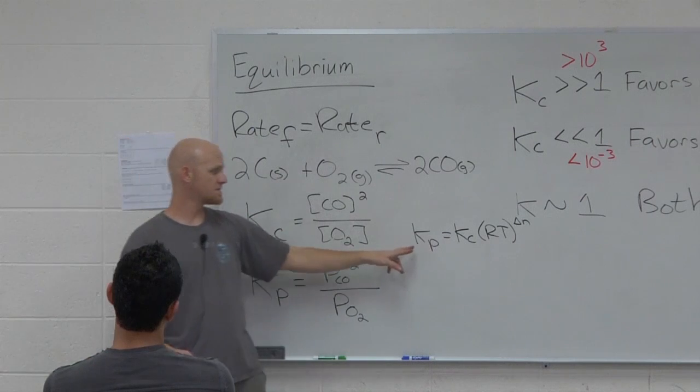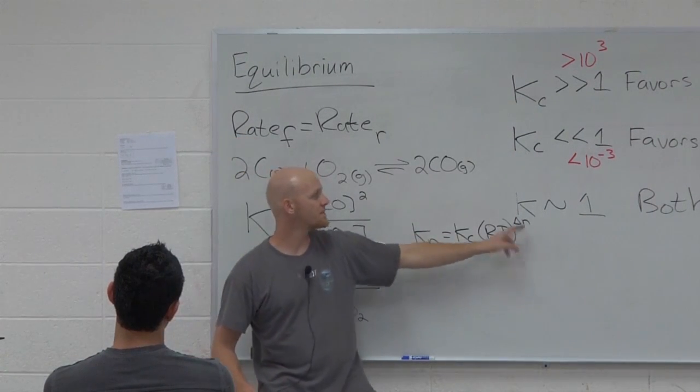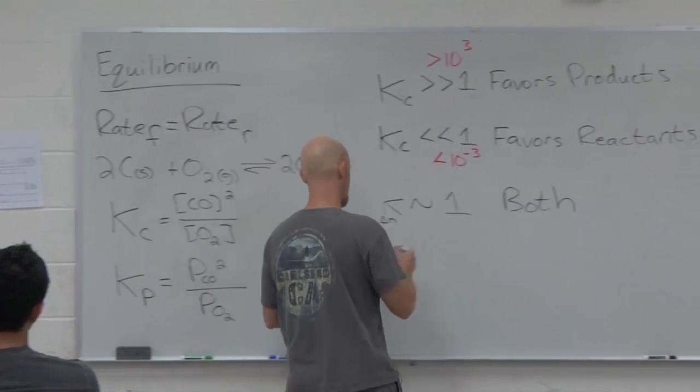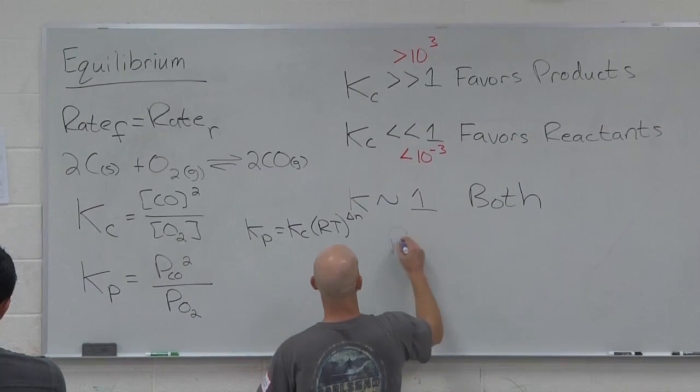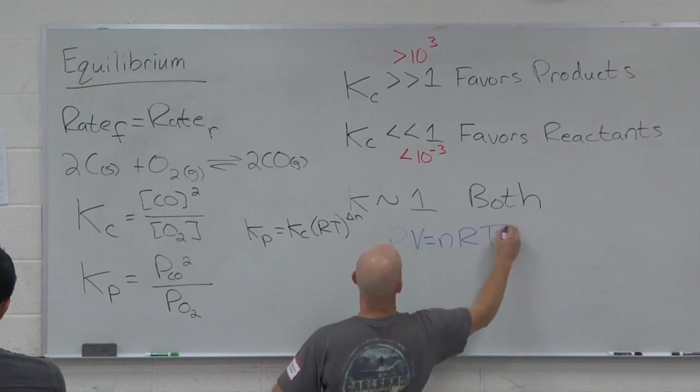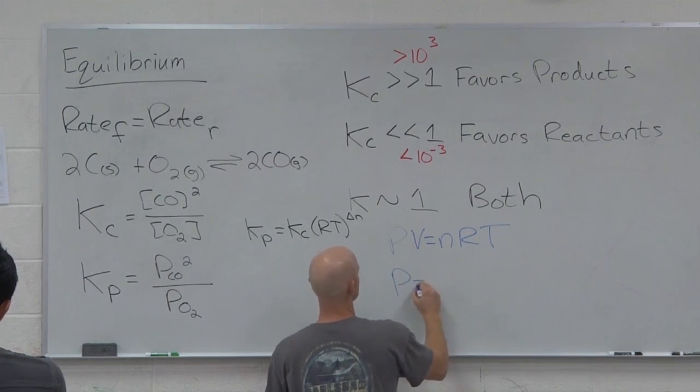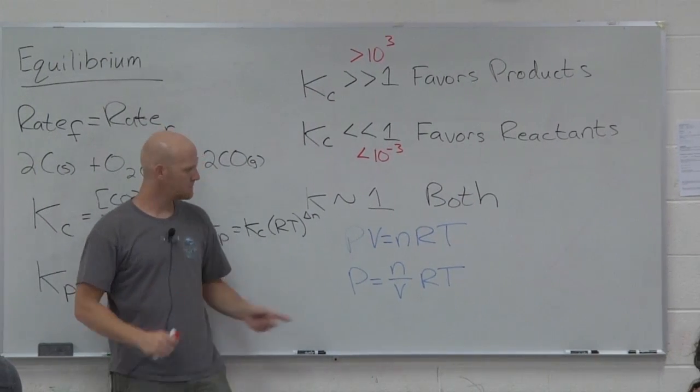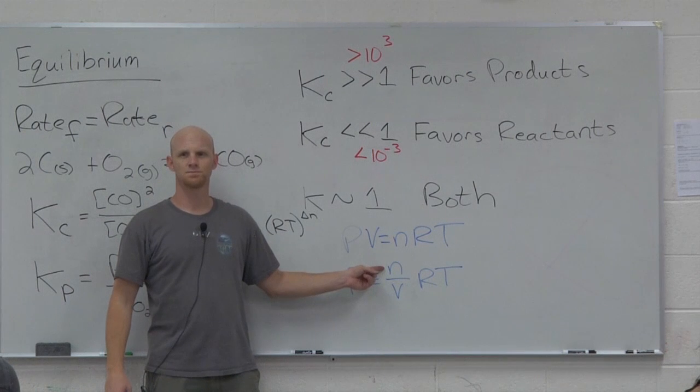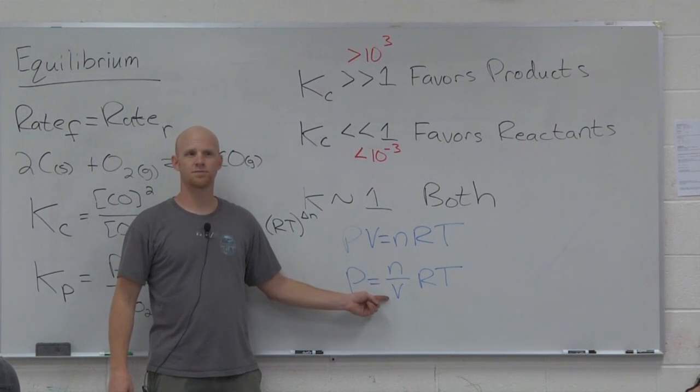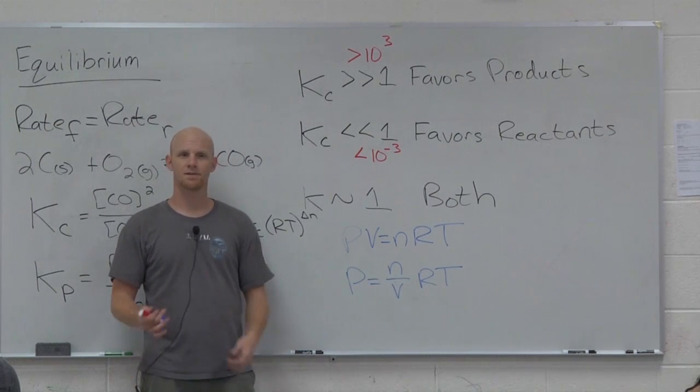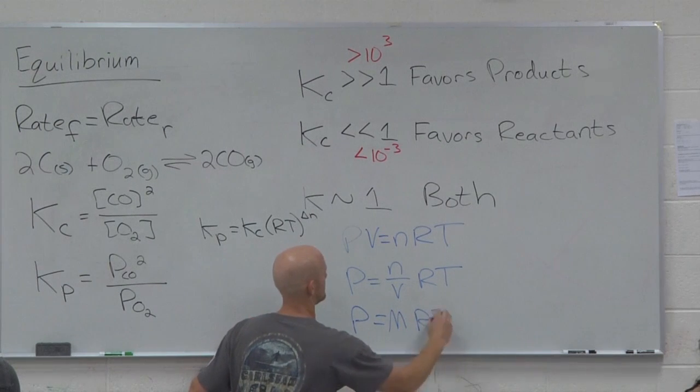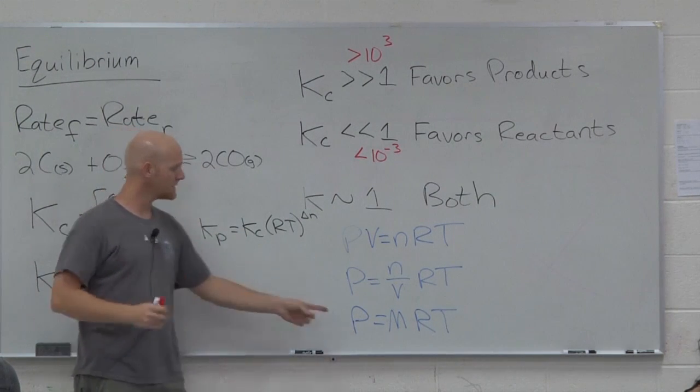So if we're trying to look at the relationship between Kp and Kc here, for this reaction delta N would be positive one. Now where that comes from, so it turns out we can derive that from PV equals nRT. We'll rearrange it just a little bit to look like this. In PV equals nRT, the ideal gas law, what's N? Moles of gas, what's V? Volume usually measured in units of liters. What's moles over liters? Molarity. And so pressure is equal to molarity times RT.